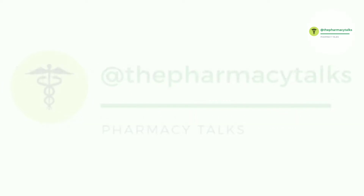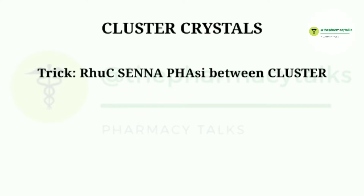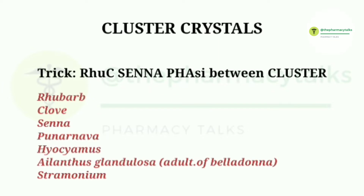Firstly, we'll discuss about the cluster crystals. The trick to remember the secondary metabolites of this type is 'Rucicenophase between cluster.' It includes rhubarb, clove, senna, paninavar, hyoscyamus, Ailanthus glandulosa — which is an adulteration of belladonna — and stramonium.